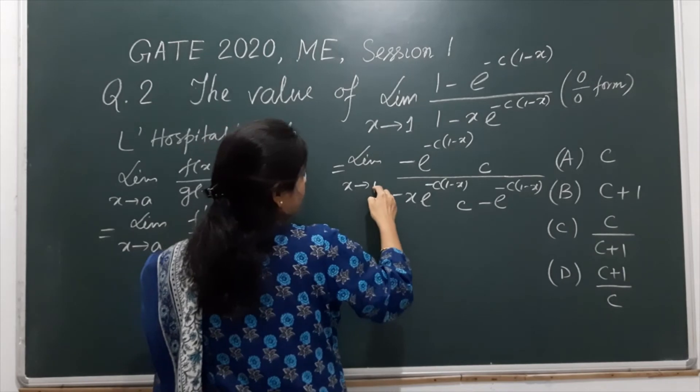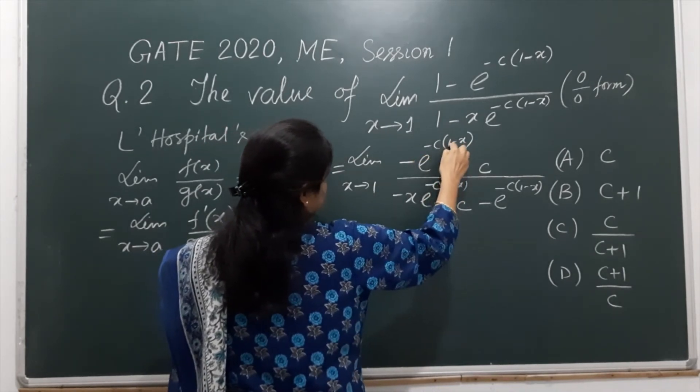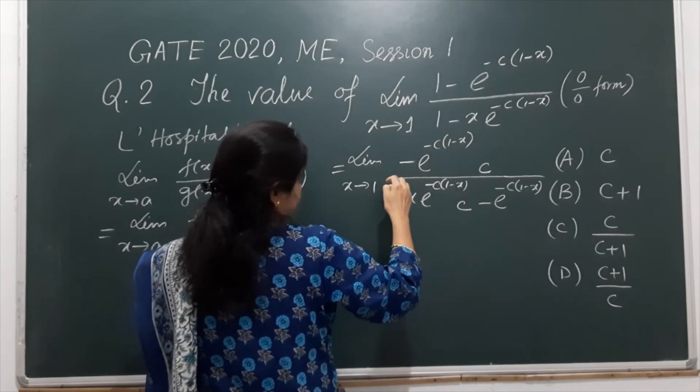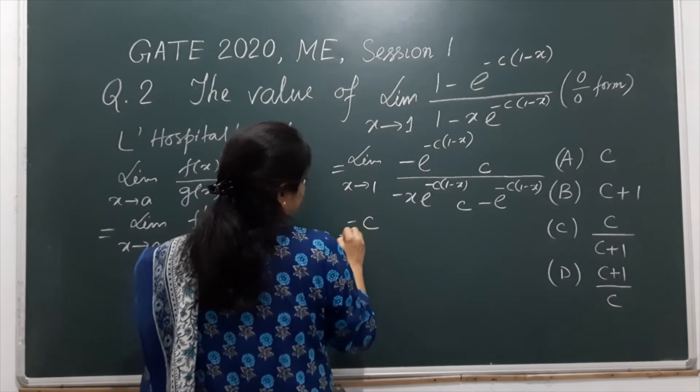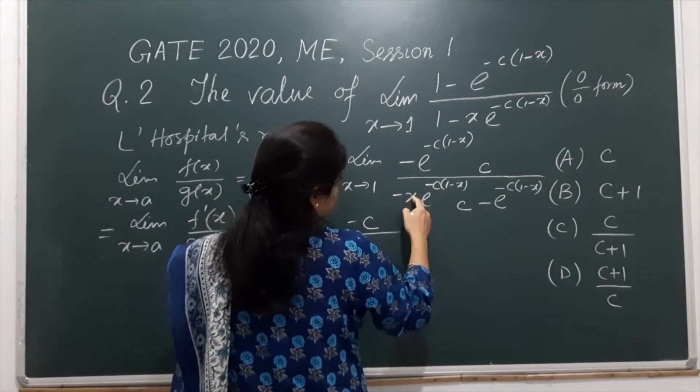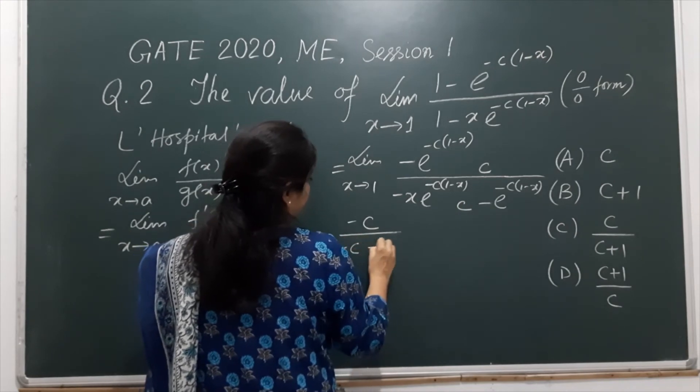let us put x tends to 1, x as 1. So e power 0 is 1 and c will remain as it is minus c, divided by here x is 1 and e power 0 is 1. So this is minus c minus 1.